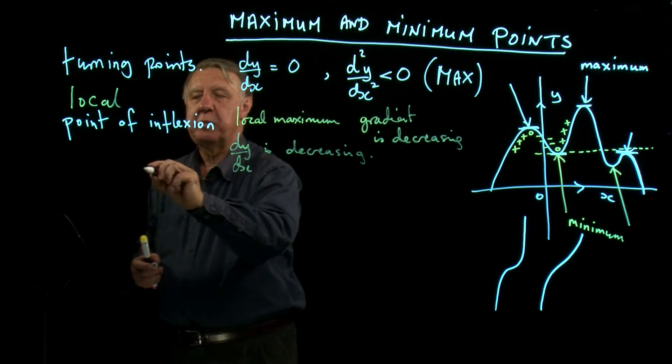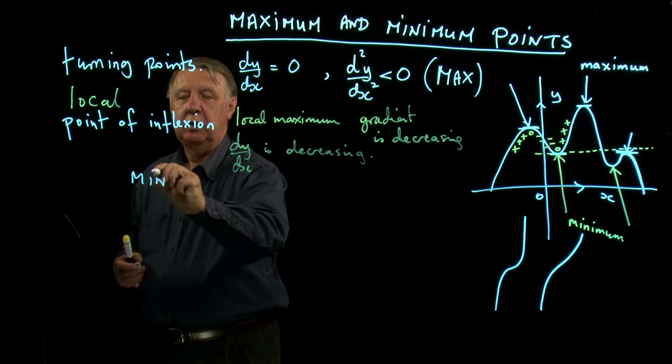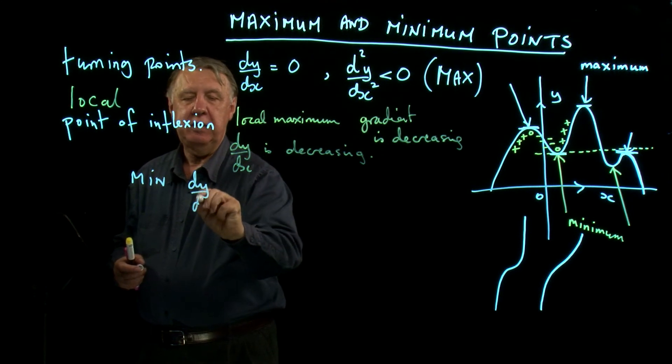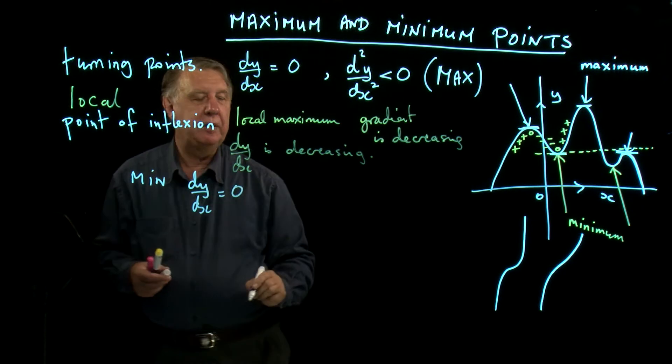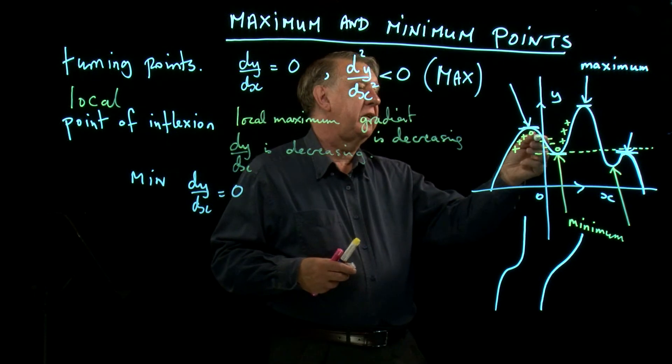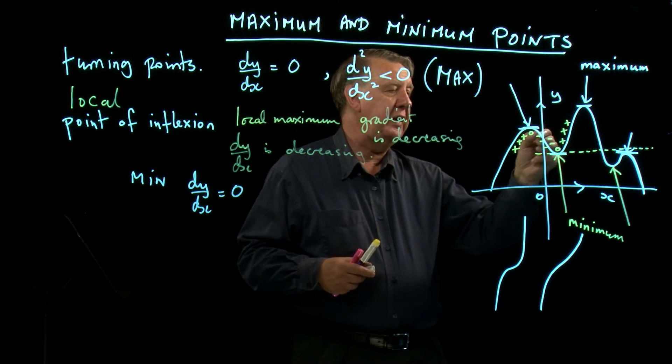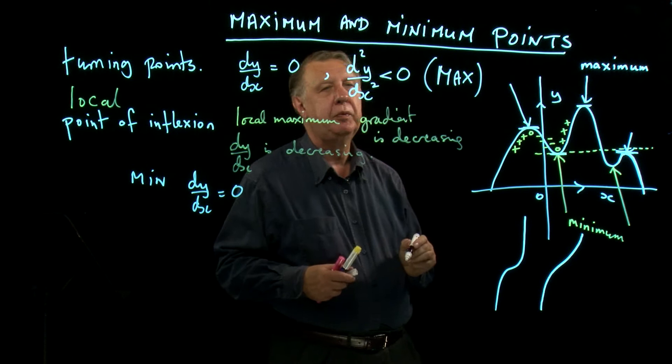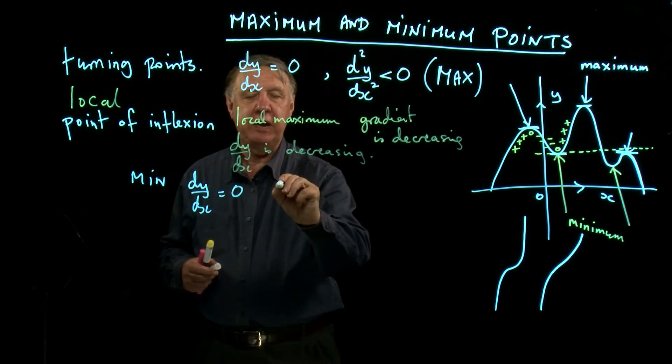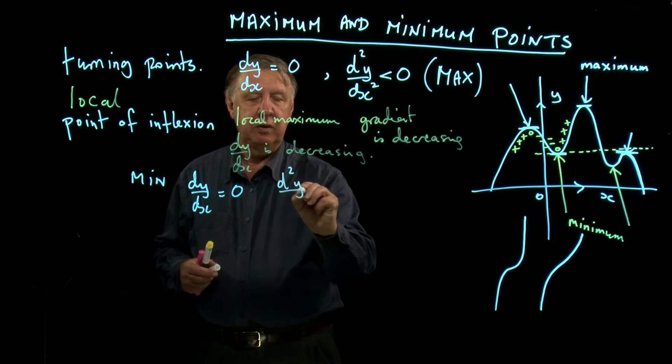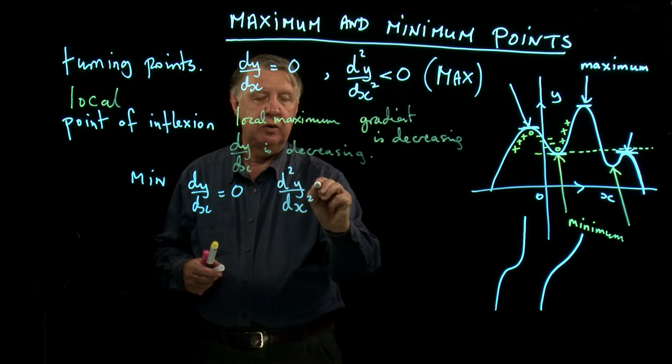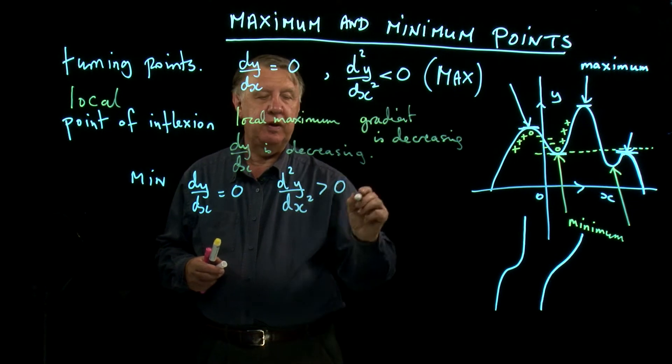Similarly, at a minimum, the gradient is increasing as we go through the trough. So d²y/dx² is positive at a minimum.